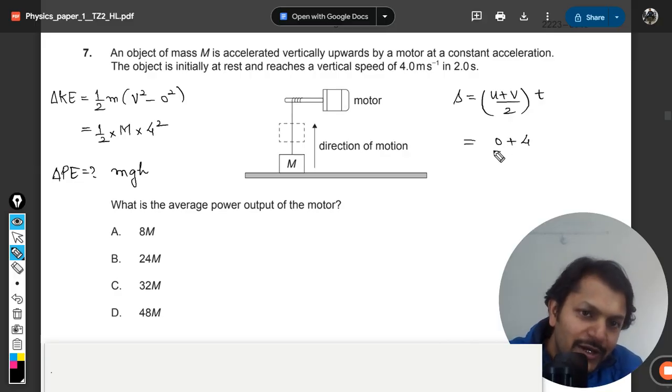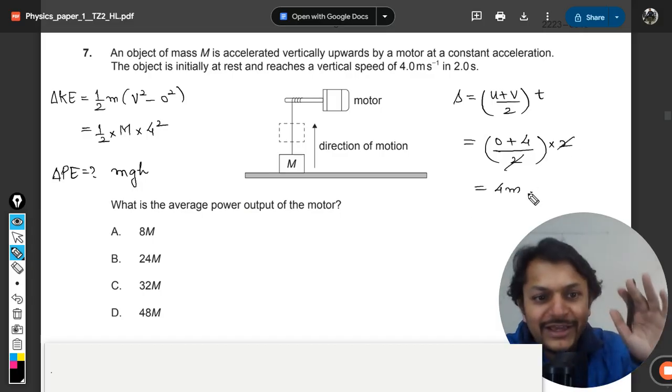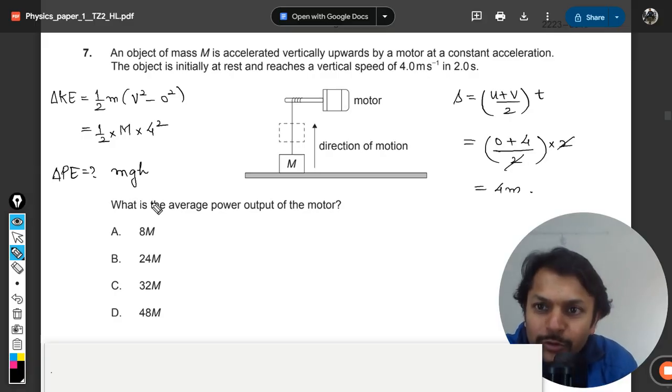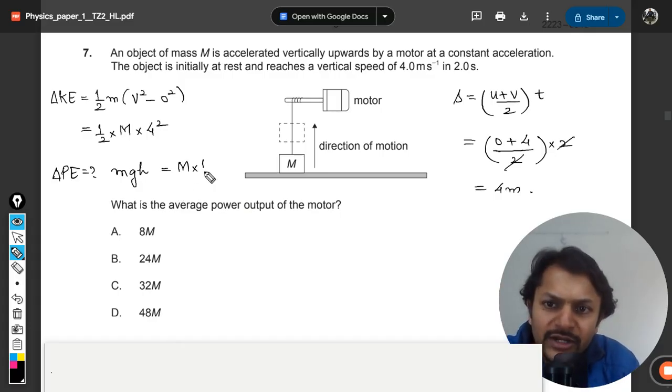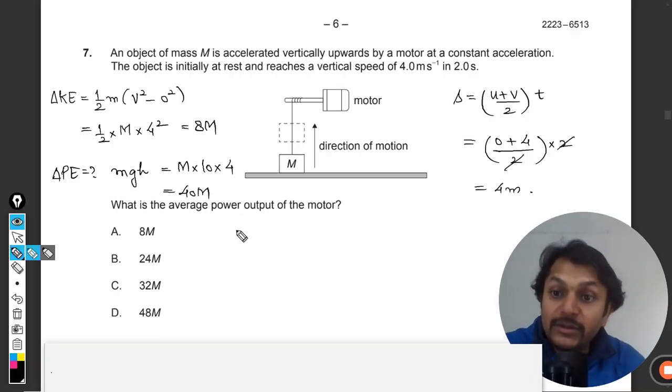So u is 0, v is 4, divided by 2, and time is 2. This gives us height = 4 meters. The potential energy is mgh = m × 10 × 4 = 40m. The kinetic energy is 8m. So the total energy added into the system is 48m.